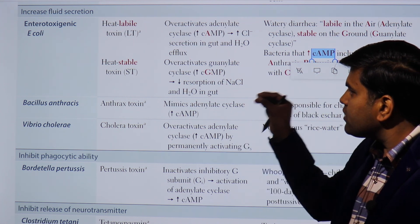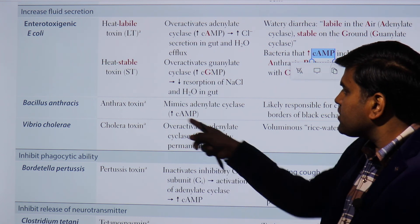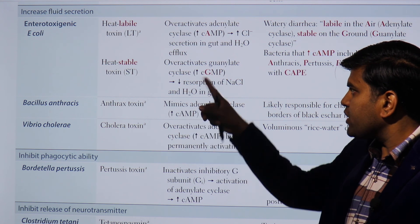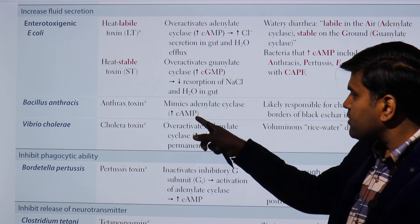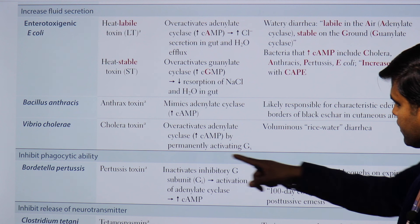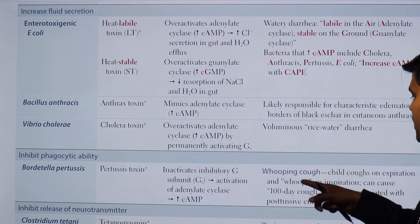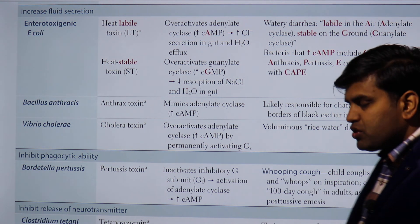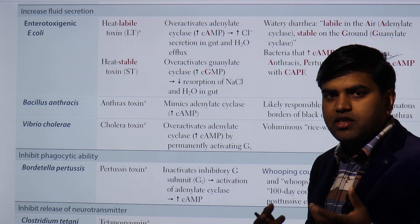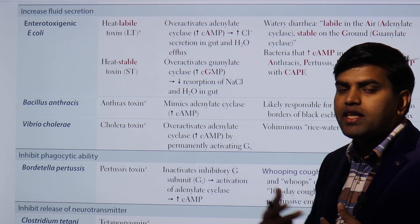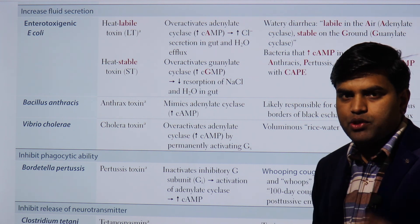In conclusion, bacterial exotoxins acting by increased fluid secretion use the second messenger cyclic AMP. Bordetella pertussis causes whooping cough — the child coughs on expiration and whoops on inspiration — also known as the hundred-day cough in adults, associated with post-tussive emesis. There is a machine-gun–like continuous cough followed by an inspiratory whoop and then vomiting after the coughing episode.